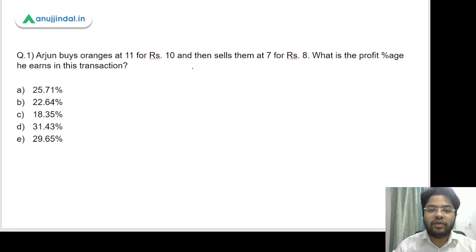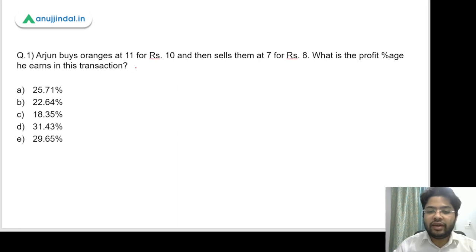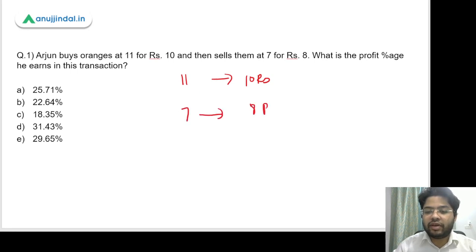First up we have a question. Arjun buys oranges at 11 for rupees 10 and then sells them at 7 for rupees 10. What is the profit percentage he earns in the strategy? So what they're saying is Arjun buys oranges at 11 for rupees 10, meaning if he buys 11 oranges he pays 10 rupees. And when he sells them, he offers 7 oranges and expects 8 rupees for it.